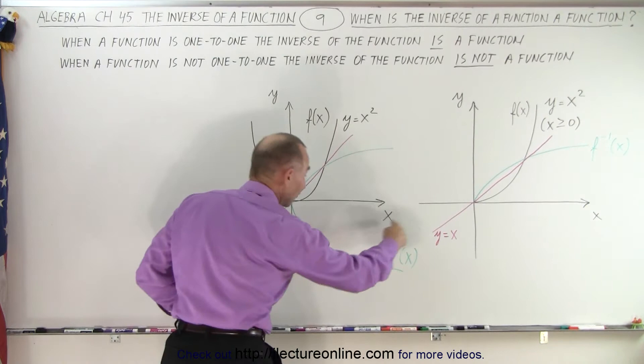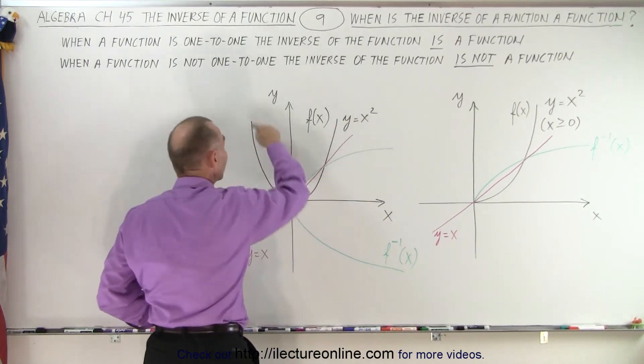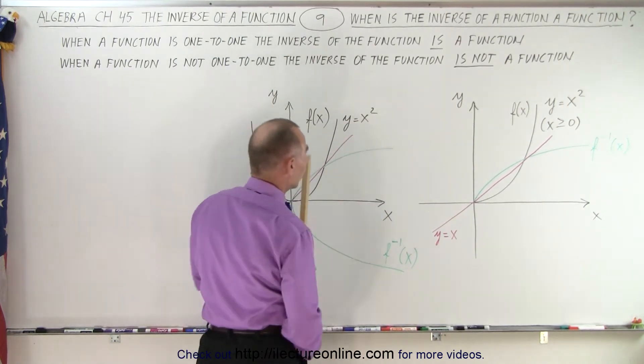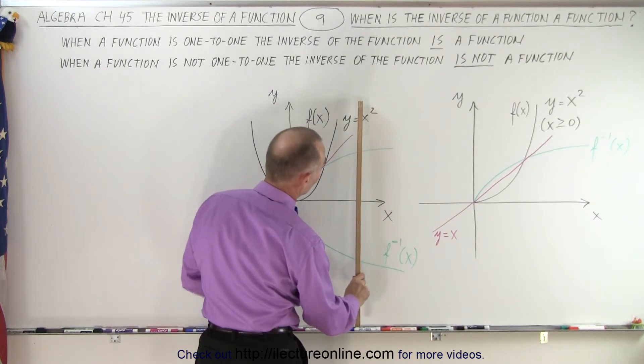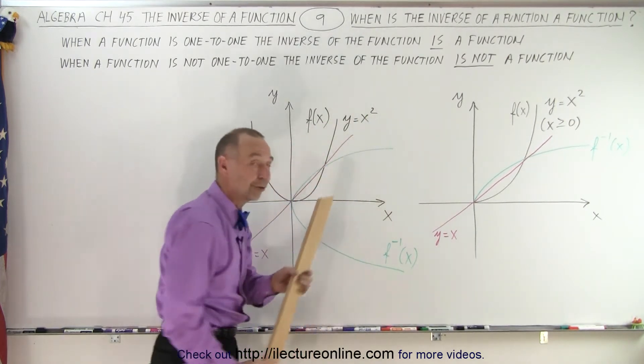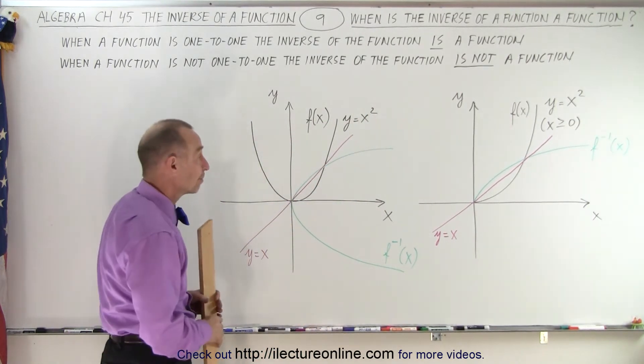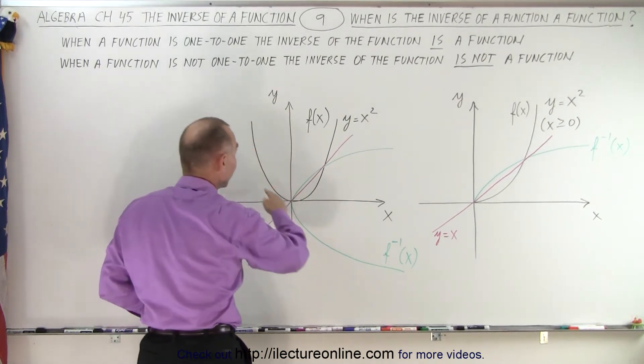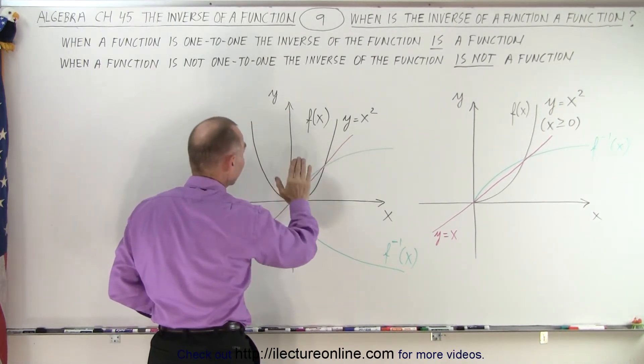And therefore, the inverse of this function is not a function. It's a relation because you can see it fails the vertical line test. There's two crossings. So even though this is a function, it's not a one-to-one function.